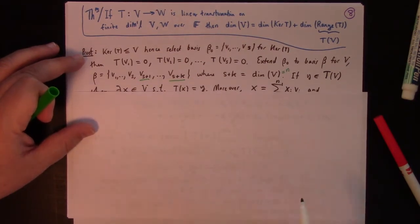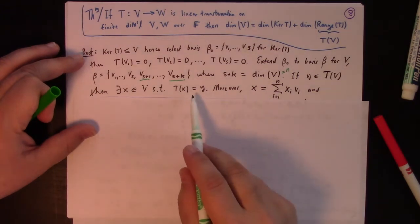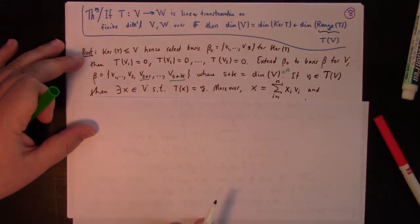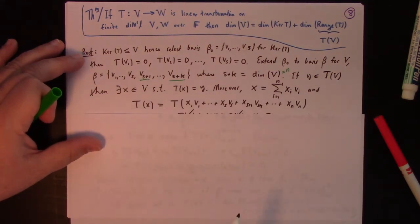If y is in the image, right, if y is in T of V, that means that there exists an x in V such that T of x is equal to y. But we can do more. We can expand that x in terms of the beta basis. And so T of x is this. But then we can use additivity and homogeneity to pull out the constants.